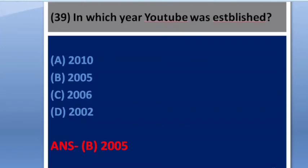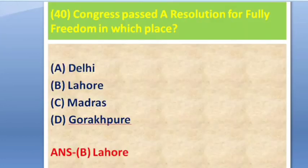Next question: In which year was YouTube established? The answer is option B — 2005. Next question: Congress passed a resolution for full freedom at which place? Options: Delhi, Lahore, Madras, Gorakhpur. The answer is option B — Lahore.